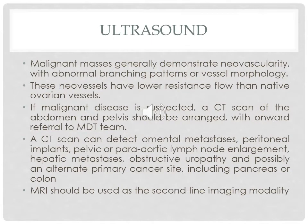Ultrasound remains the first-line investigation for postmenopausal ovarian cysts. The aim is to identify criteria of malignancy. A benign cyst with no concerning features is rounded or oval, has thin membranes, posterior acoustic enhancement, no papillary projections or solid areas, and anechoic fluid. A malignant cyst can be irregular, multilocular, has septations, papillary projections, and increased blood flow. Color Doppler combined with ultrasound can be of benefit, as malignant masses generally demonstrate neovascularity with abnormal branching patterns and lower resistance flow than native ovarian vessels. If ovarian malignancy is suspected on ultrasound, the next step is CT scan to identify metastasis, ascites, and lymph node enlargement.